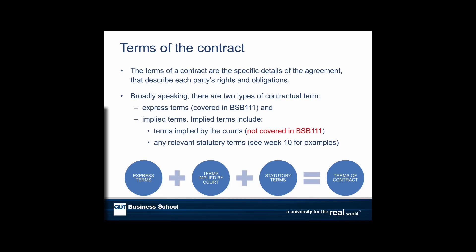The terms of a contract are the specific details that describe each party's rights and obligations. Broadly speaking there are two types of contractual terms: express terms, which as the name implies are specified — and that's what we're going to concentrate on — and implied terms that might not be written anywhere.